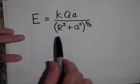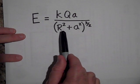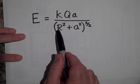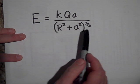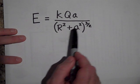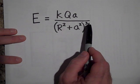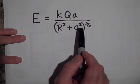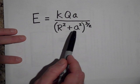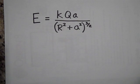And I was pointing out that if the r is really small, as r goes to zero, then you can make that term zero. So then you really have a to the third power, because a squared to the three-halves power is just a cubed. But then that a cancels with one of those. So you just get kq over a squared.